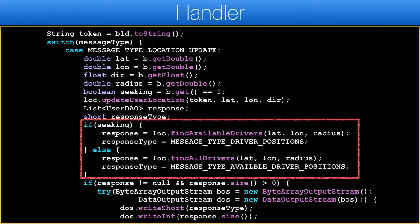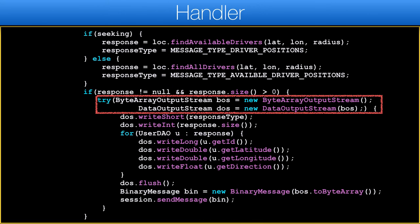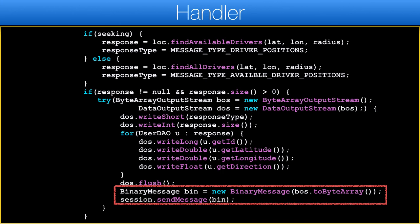We prepare to return a response based on the seeking flag, and we also need to mark the response type correctly. I used a ByteArrayOutputStream to construct the response, and try-with-resources to close the streams automatically when done. I just write out the response data to the stream, then convert the byte array output stream data to a byte array and send it to the client. And this is it for the basic server code.